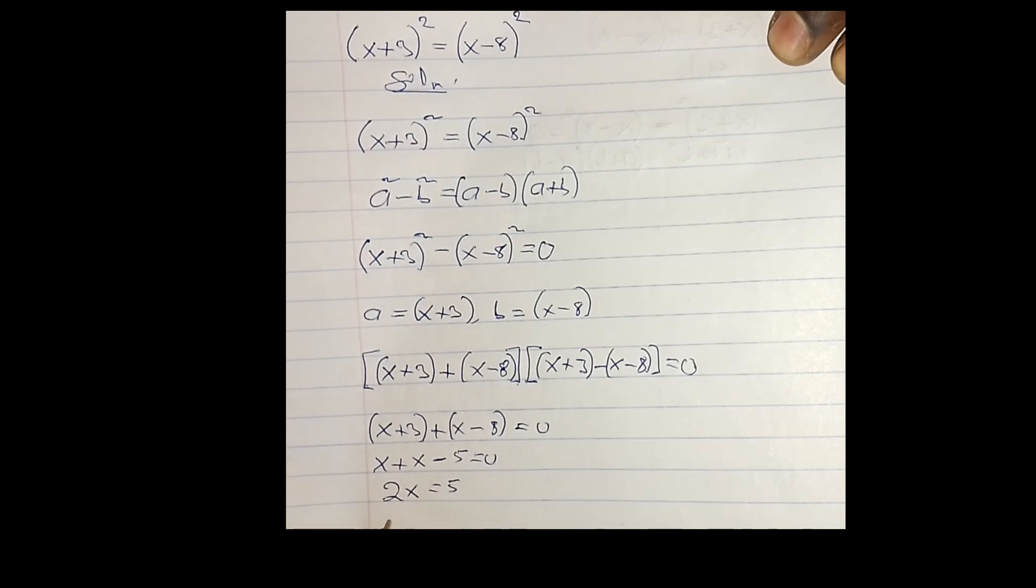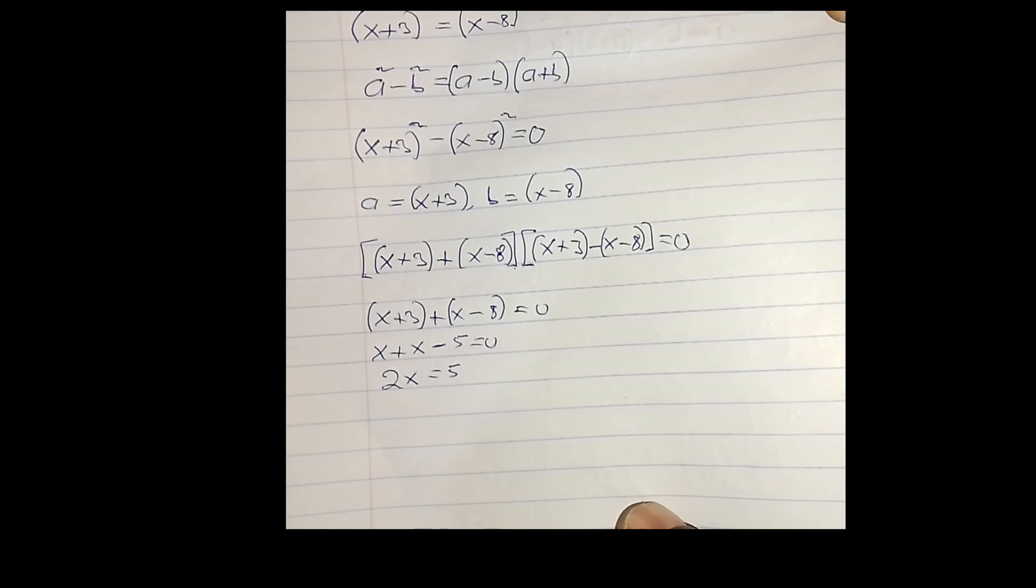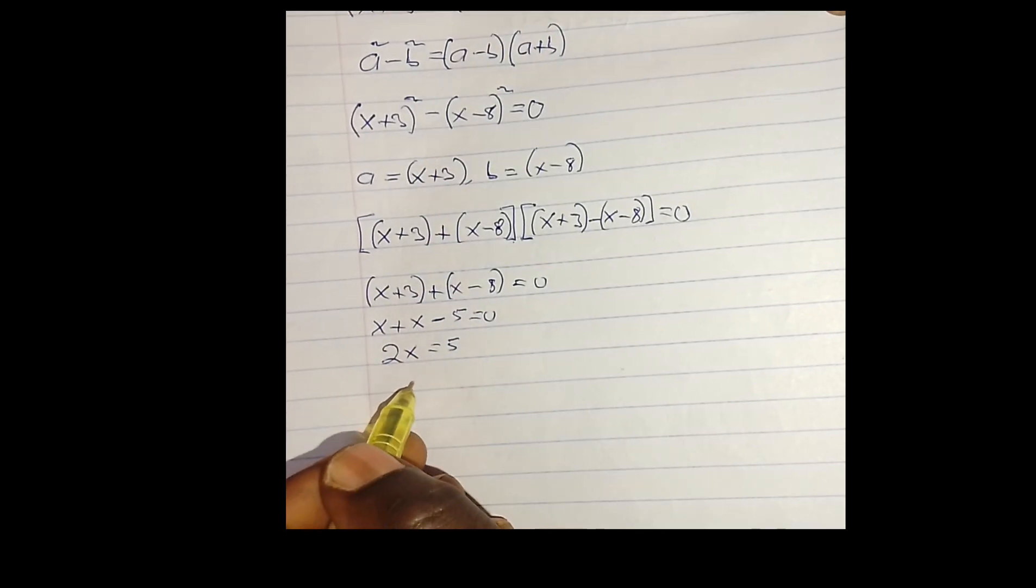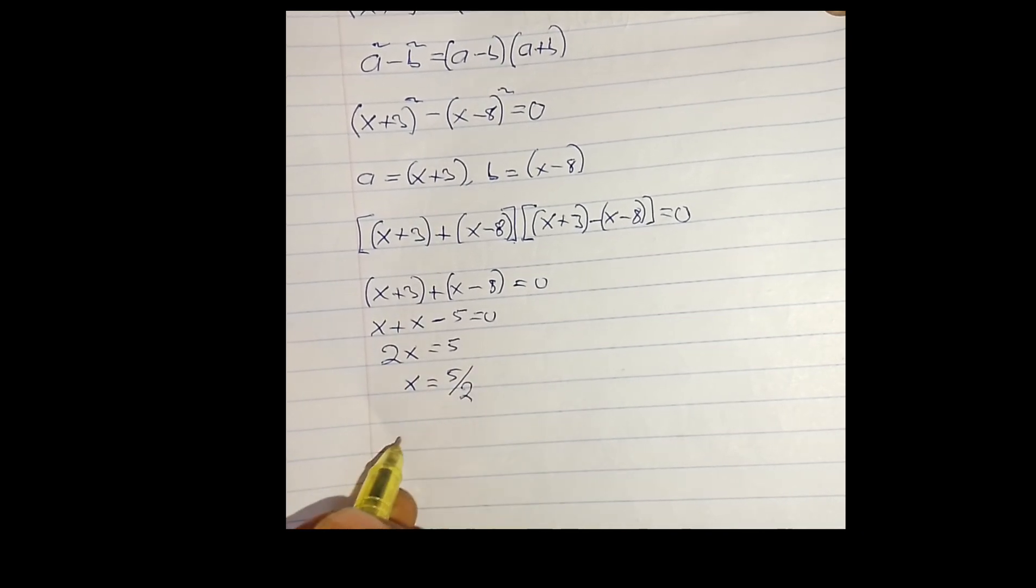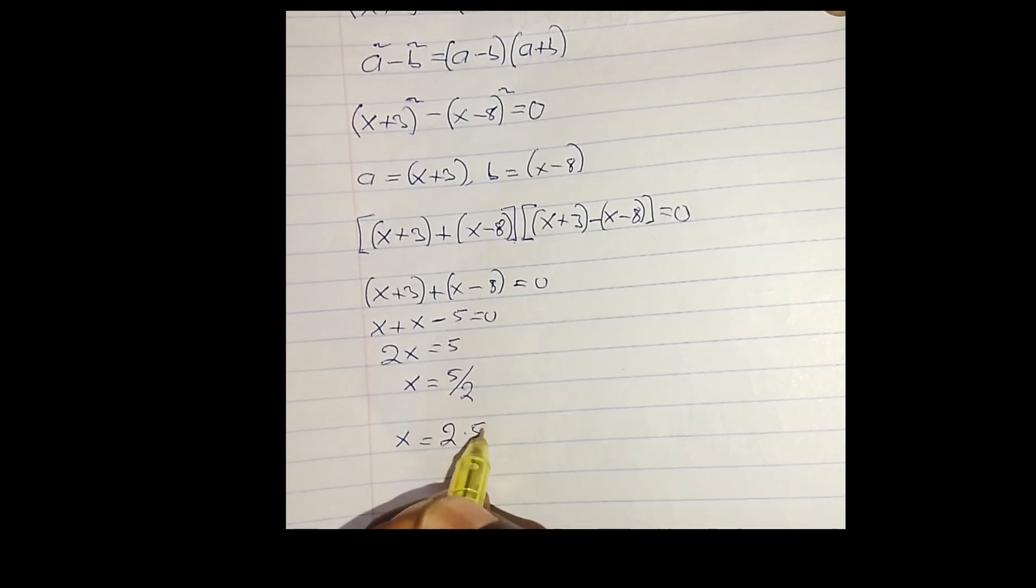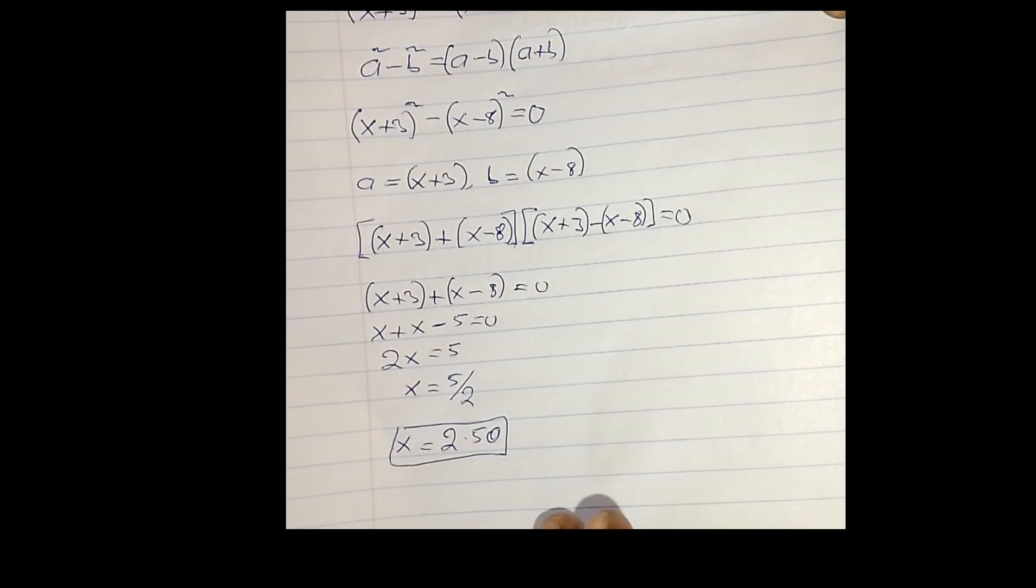So I'm looking for x. I need to divide both sides by 2. If that is the case, I'm going to have x equals 5 divided by 2, and x equals 2.50 as the value of x.